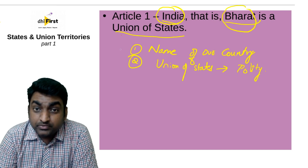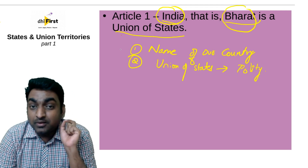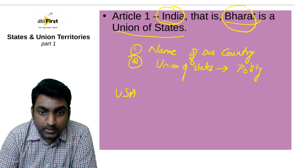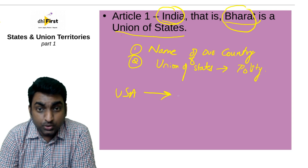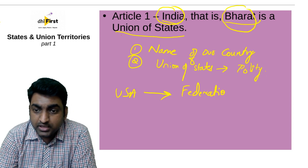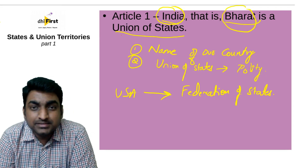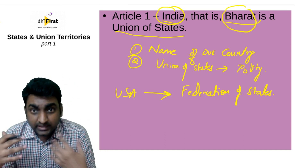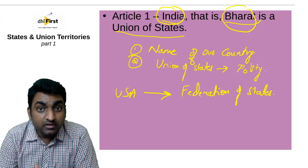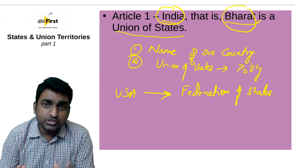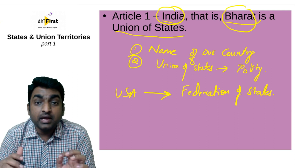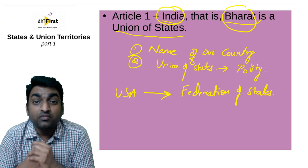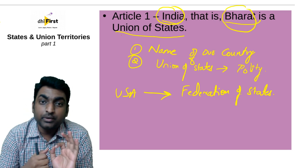We are a union of states — please focus on these words. We are not a federation of states. Both are different things. In the USA, its constitution terms it as a federation of states, meaning all the states signed a contract with each other to stay together as a country. But in India, none of the states — be it Karnataka, Punjab, Haryana, or any union territory — have signed an agreement to be united. That is why we are not a federation of states; we are a union of states. USA is a classic example of a federation of states.